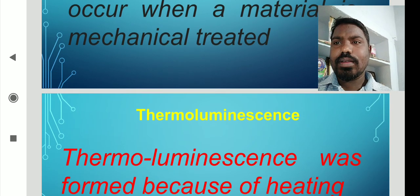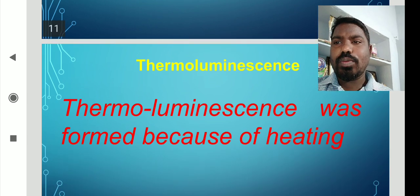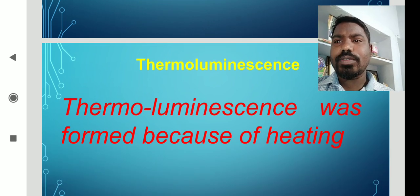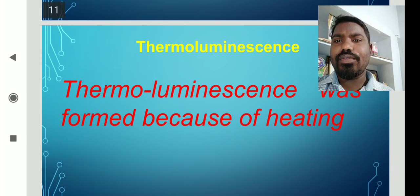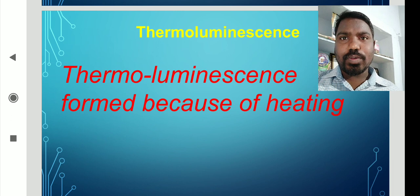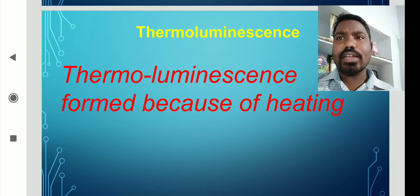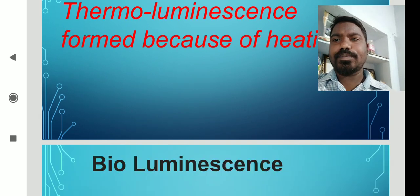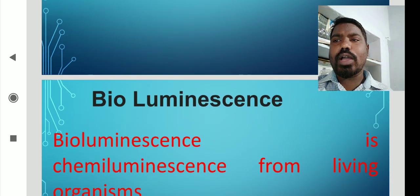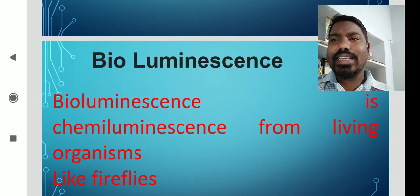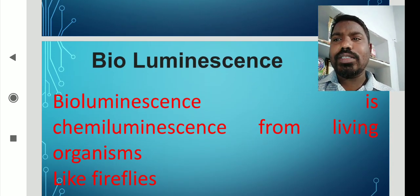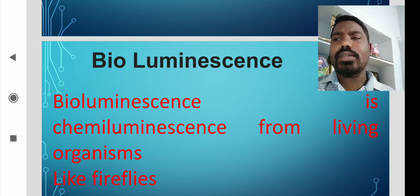Thermoluminescence is formed because of heating — a luminescence which is produced at low temperatures of heating is called thermoluminescence. Bioluminescence is chemiluminescence from living organisms, like fireflies.